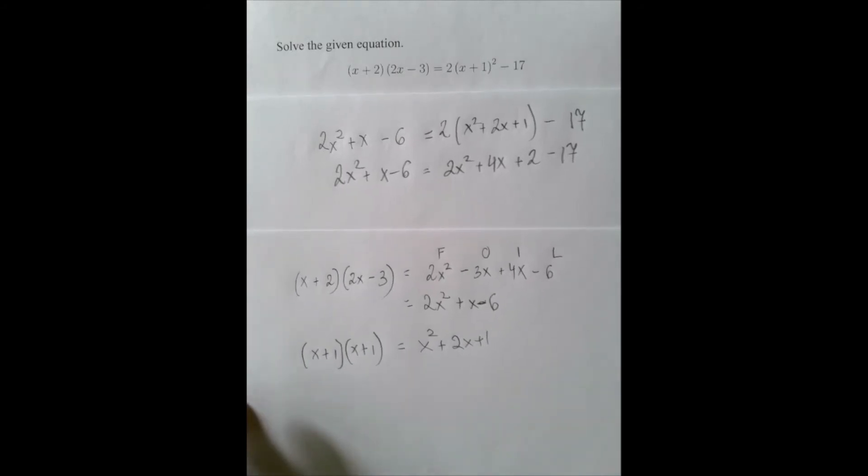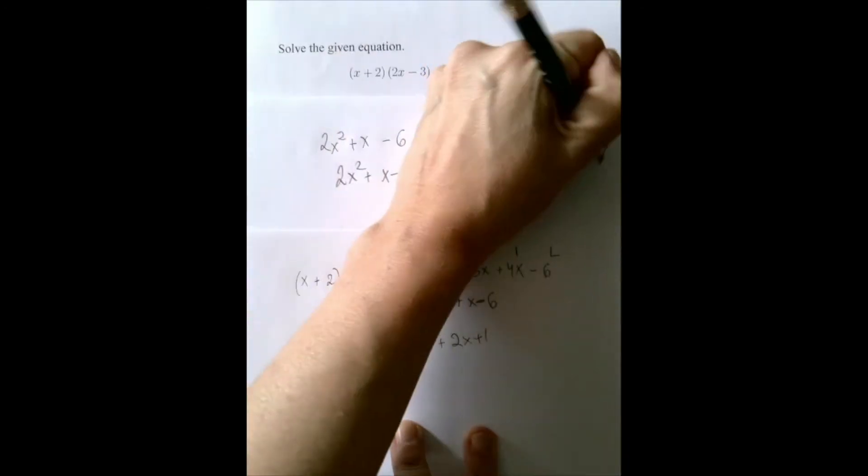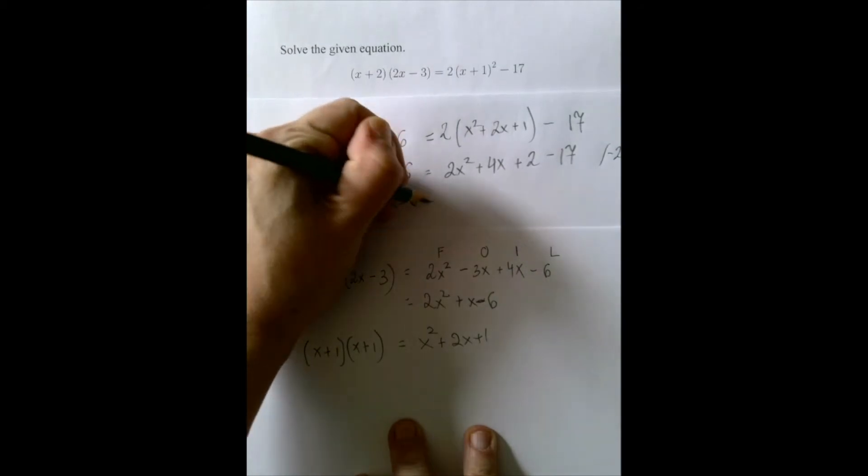This equation at this point looks like it is quadratic. But if you notice, the quadratic terms will cancel out. So, if we subtract 2x squared from both sides, the quadratic piece simply disappears. And so, this equation becomes linear.